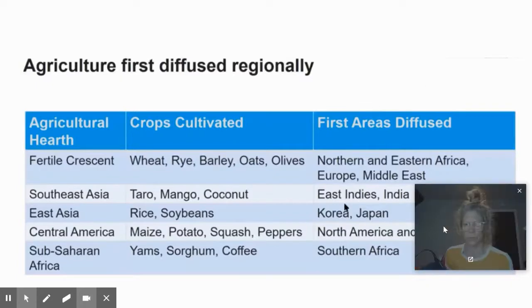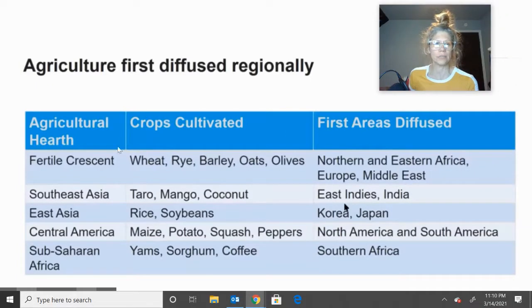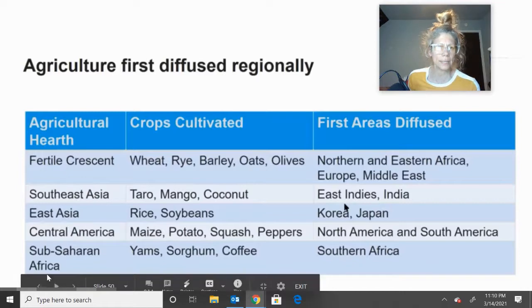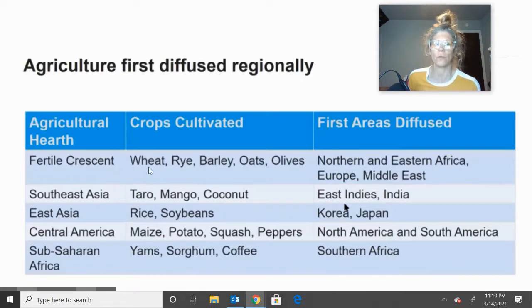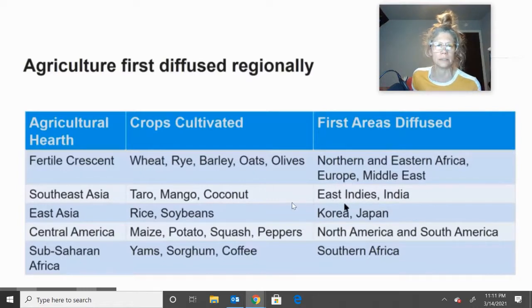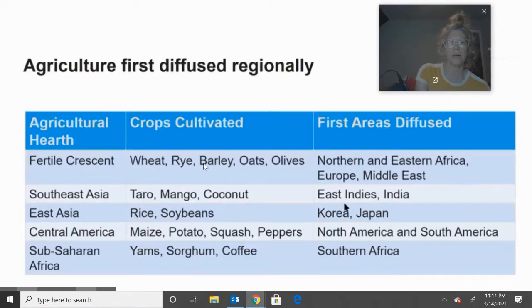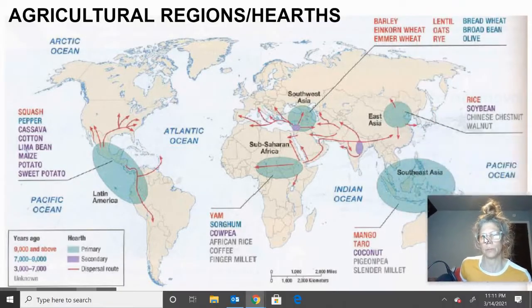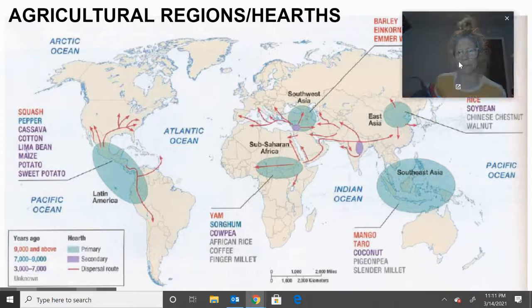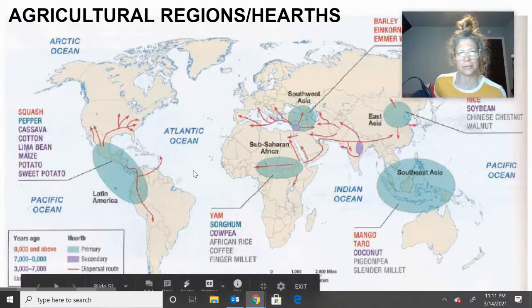In this first part of your notes you have this chart — I'm not going to read it to you, but be familiar with these hearths. These are locations you want to know along with what crops were cultivated there. For example, wheat originated in the Fertile Crescent and spread to Africa, Europe, the Middle East, and so forth. On that map, throw a little color on the big circled areas — the turquoise-blue areas are your hearths — and the little arrows show where crops diffused.